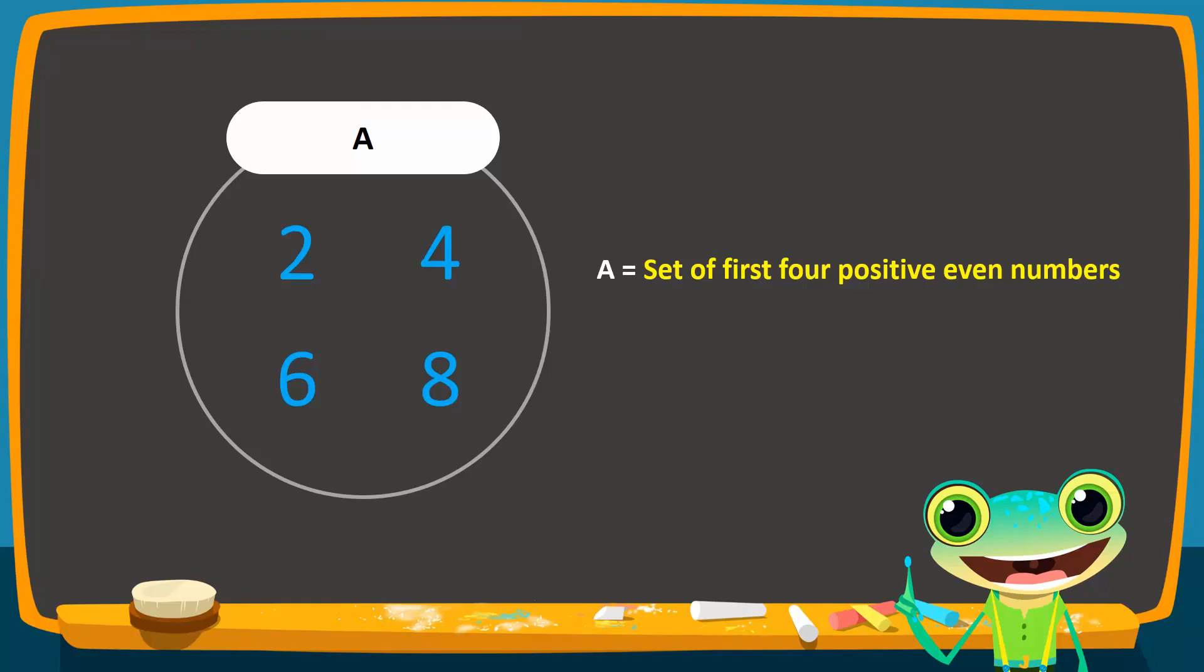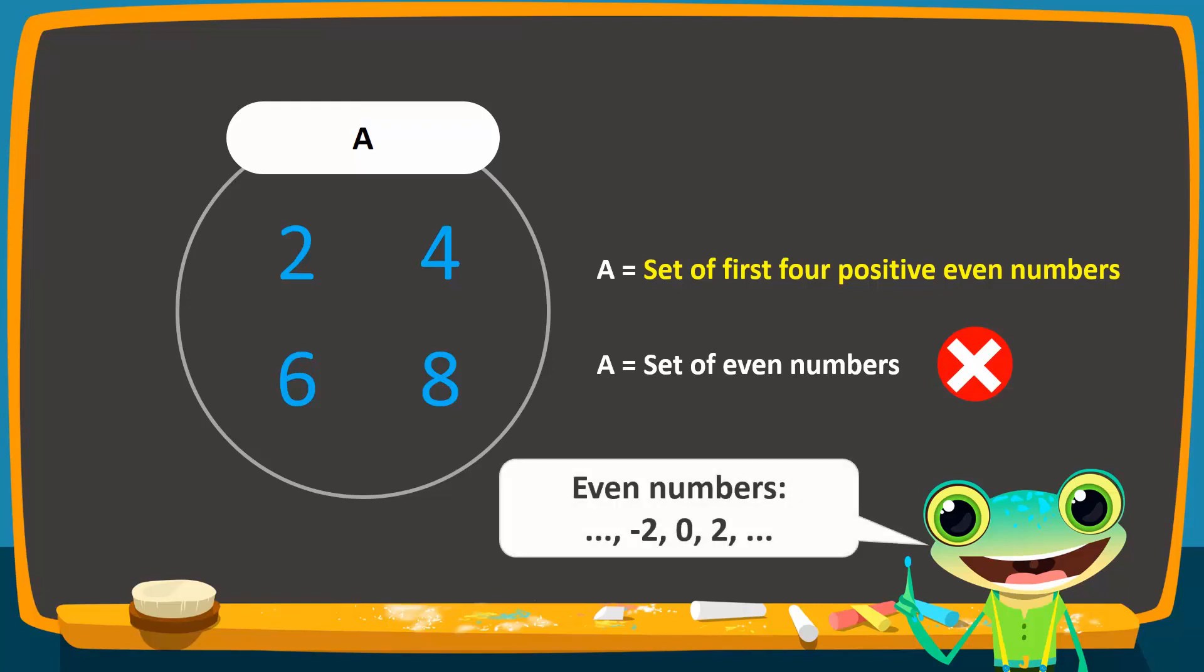An important thing to note here is that we cannot describe this group of numbers as a set of even numbers. The set of all even numbers contains infinitely many numbers like negative 2, 0, 2, and so on. On the other hand, the set of the first four positive even numbers only includes 2, 4, 6, and 8.